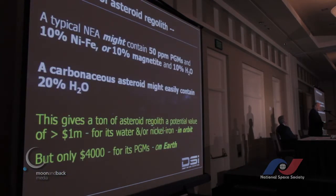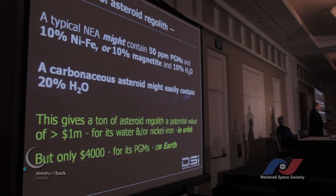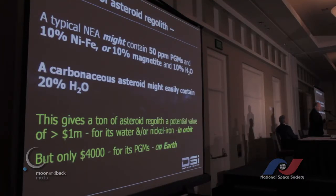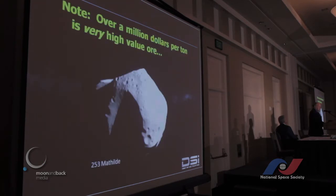The value of asteroid regolith - a typical near-Earth asteroid might contain 50 parts per million platinum group metals, 10% nickel-iron metal, or 10% oxidised metal as magnetite, and it might contain 10% water. A carbonaceous asteroid might easily contain 20% water. That material extracted and provided for use in space might be worth something upwards of a million dollars per tonne - based on near-future launch costs. A million dollars a tonne is very, very valuable ore. I just showed you ore worth $170-$250 per tonne - we're talking about a million dollars a tonne.